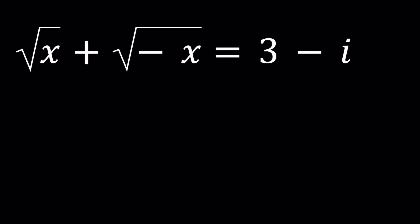Hello everyone. In this video, we're going to be solving an interesting radical equation — a radical equation with complex numbers. We've done a similar problem before; I'll share the links down below and you can also check that out here. So we have: square root of x plus the square root of negative x equals 3 minus i, and we're going to be solving for x values.